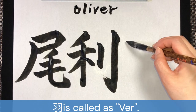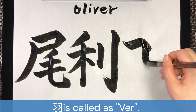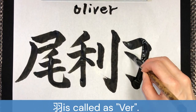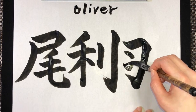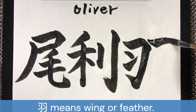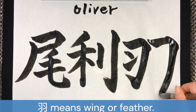This kanji is called Burr. Burr means wing or feather.